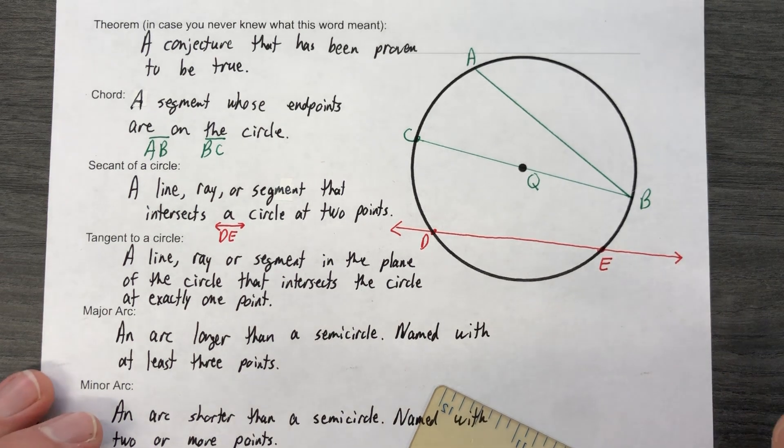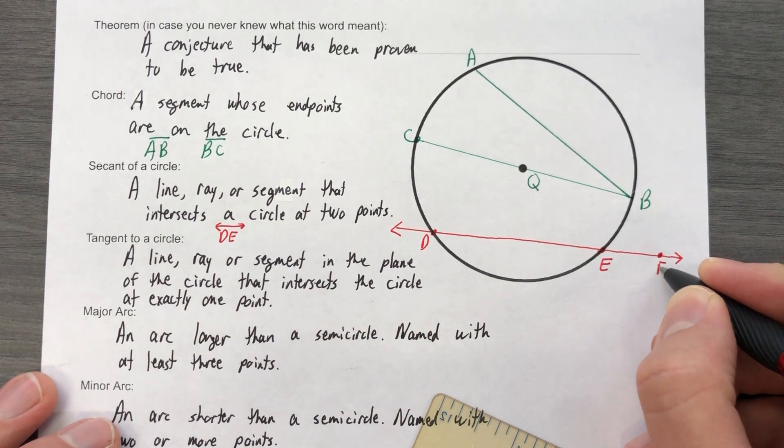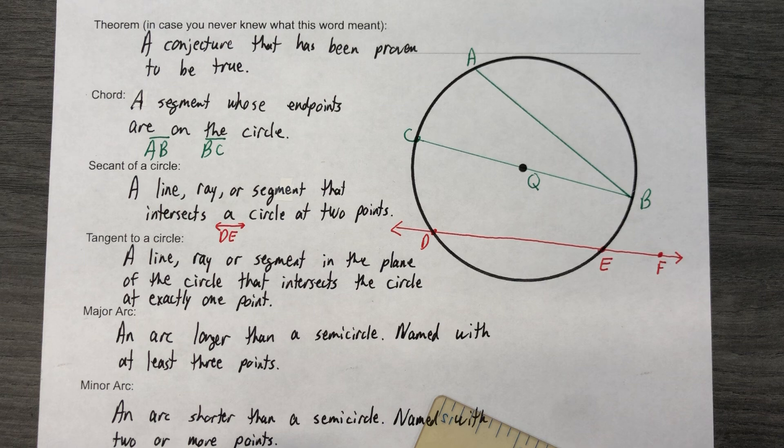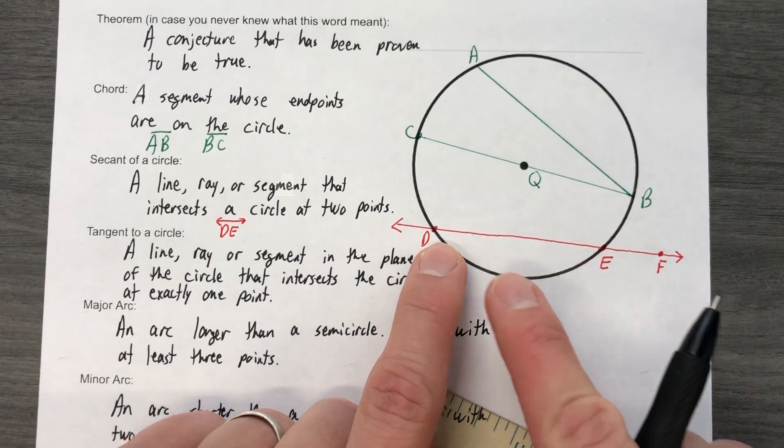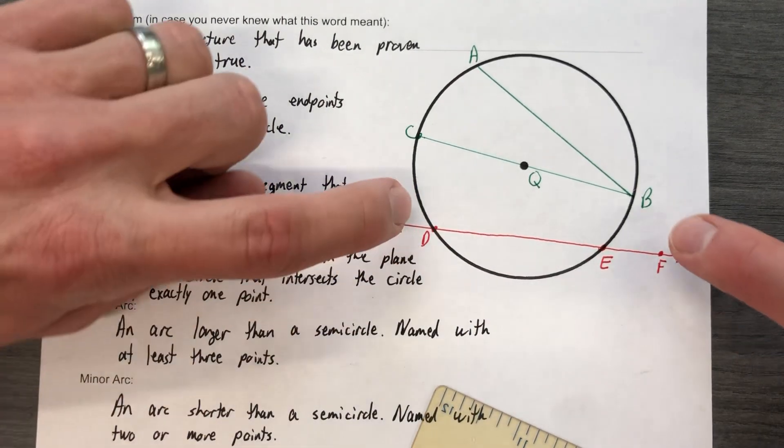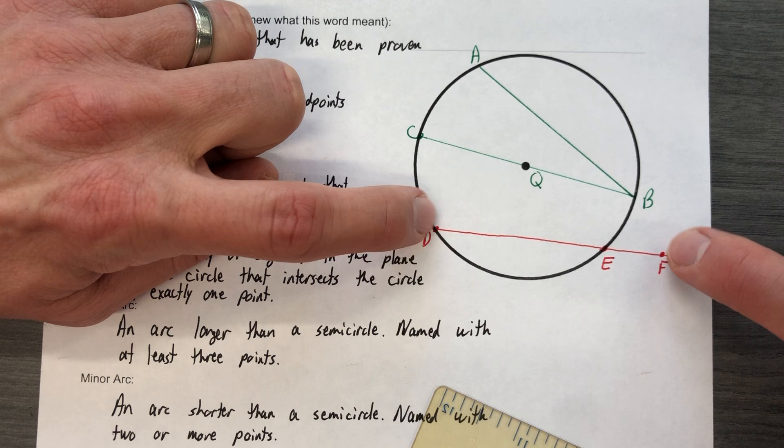I could also put a point out here, and I would say that the segment DE is a chord, but the segment DF, ending and beginning at D and F, would be a secant. So chord, secant, just saying.